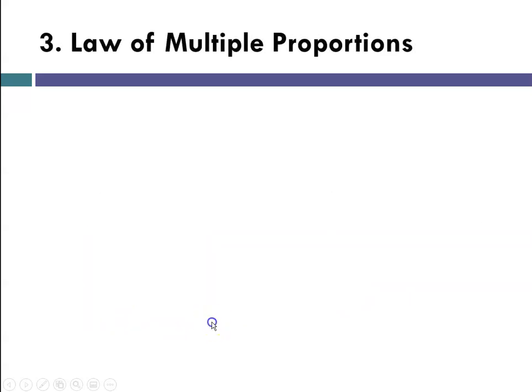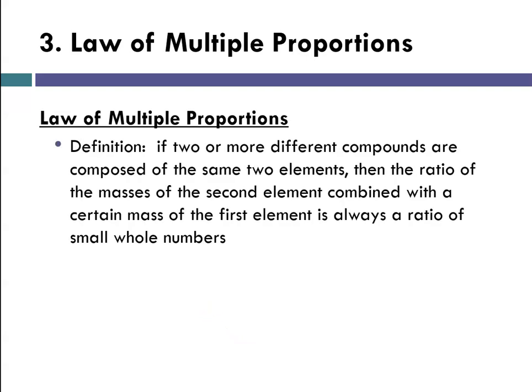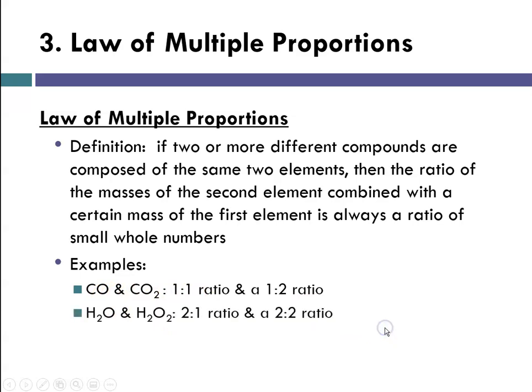The third law was the law of multiple proportions, which states that for two or more compounds composed of the same two elements, there will always be some ratio of those elements, and it'll always be a small whole number ratio. For instance, carbon might combine with hydrogen in a one-to-one ratio, or a two-to-four ratio, or a two-to-three ratio, but it's always a whole number ratio. Carbon and oxygen can combine in one-to-one and one-to-two ratios. Hydrogen and oxygen can combine in a two-to-one and a two-to-two ratio.